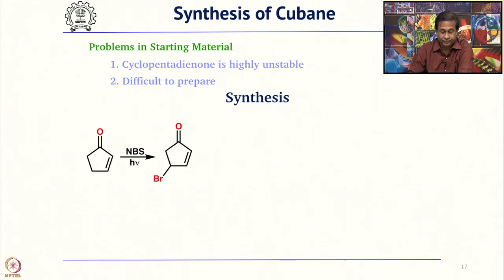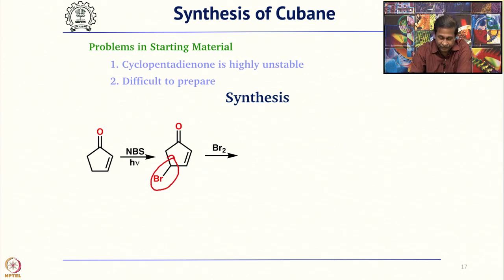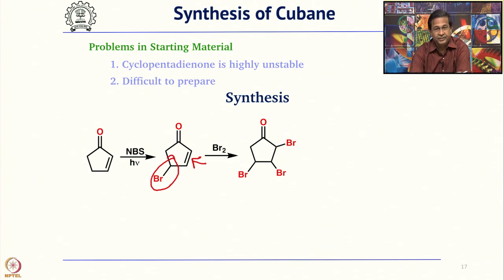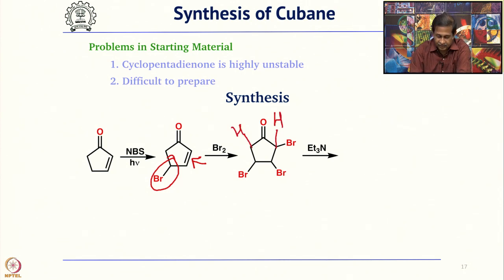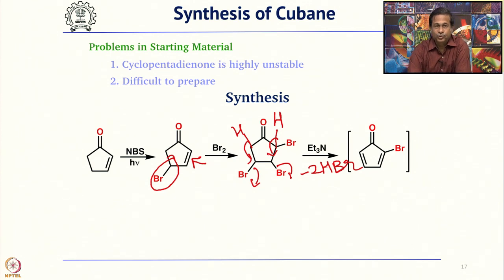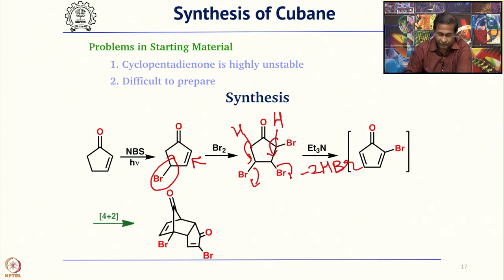We start from cyclopentenone and carry out allylic bromination with NBS under photochemical conditions. Then bromine is added to the double bond, giving a tribromo compound. If you treat with triethylamine, the two acidic protons undergo elimination — minus 2 HBr — giving 2-bromocyclopentadienone. Since that is unstable, it immediately undergoes 4+2 cycloaddition to give the next bicyclic compound. In three steps from commercially available cyclopentenone, you get this bicyclic compound.